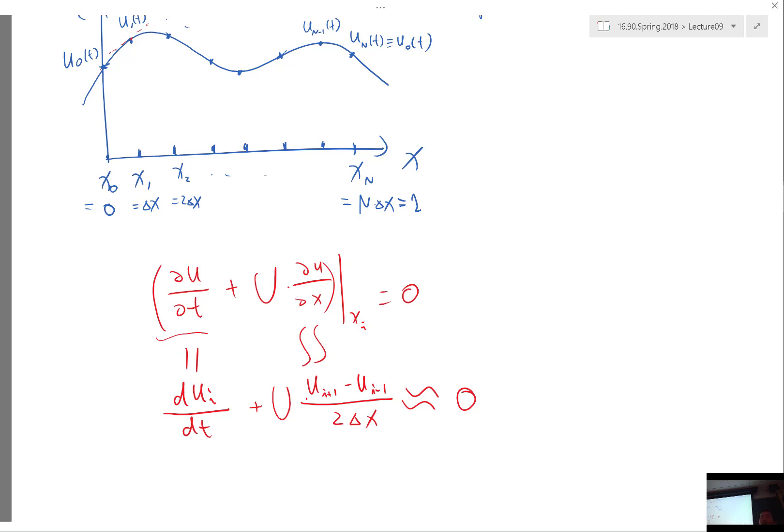So now we get to a point where the discretization, the conversion from the ODE to an approximate ODE, actually depends on the boundary condition of the PDE. So this is a very important message because without knowing the boundary condition, you actually have no way to discretize the PDE into a solvable set of ODEs. Right, you always are missing equations if you don't have boundary conditions.